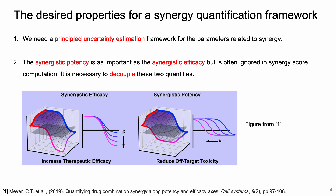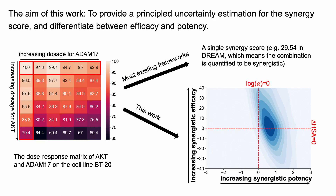However, existing synergy score frameworks have been mixing these two properties into one single score, making it challenging to extract actionable information. This leads to the aim of our work: to provide a principled uncertainty estimation for the synergy score, and at the same time, to differentiate between efficacy and potency.